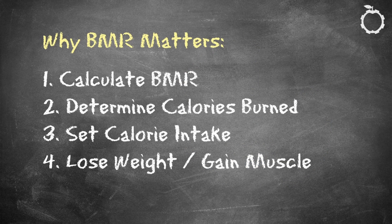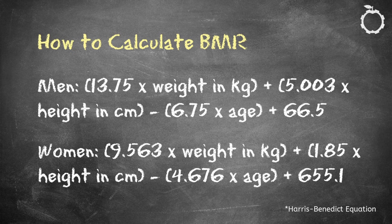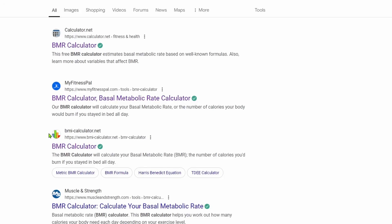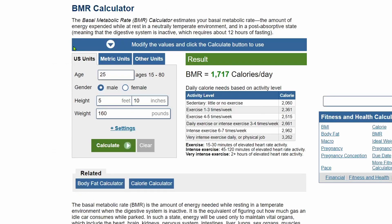Understanding BMR is vital to determining the number of calories to eat for a diet that's uniquely tailored to your metabolic rate. The easiest way to calculate BMR is using an estimation formula — you can do the calculations by hand or use an online calculator to do the math.